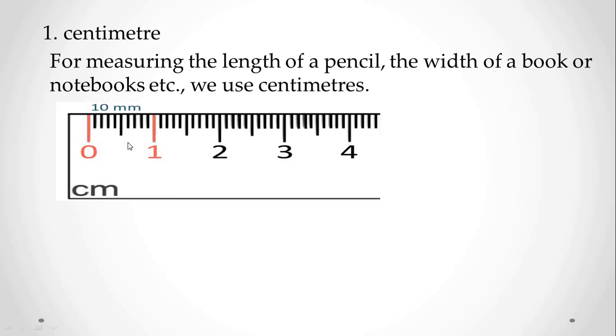So here in the ruler, they have given some numbers like 1, 2, 3, 4. So from 0 to 1 is 1 centimeter, 0 to 2 is 2 centimeters, 0 to 4 is 4 centimeters. Got it?